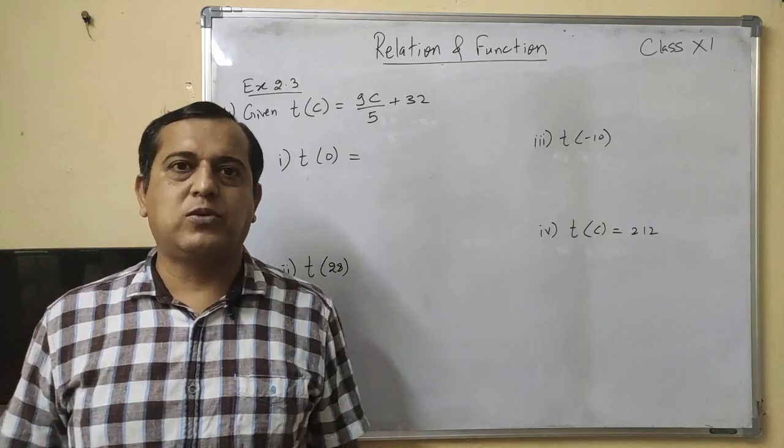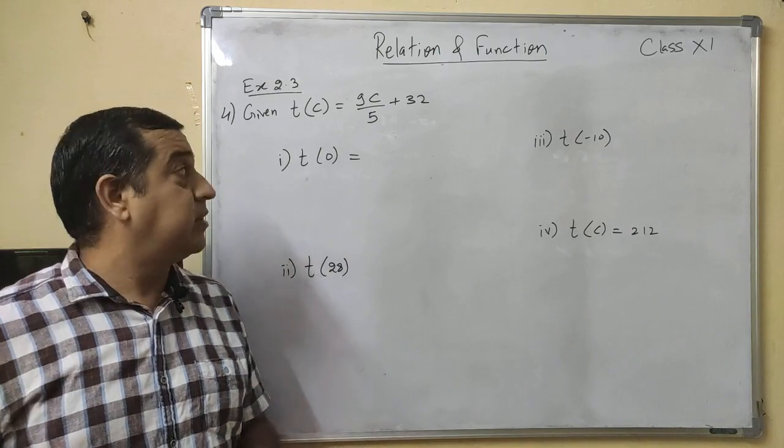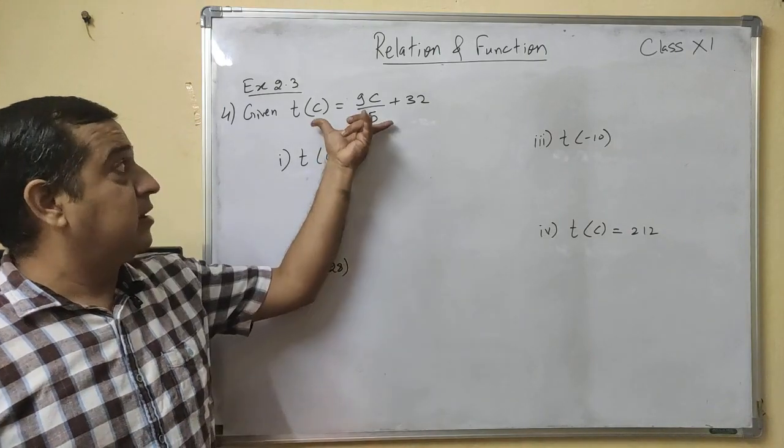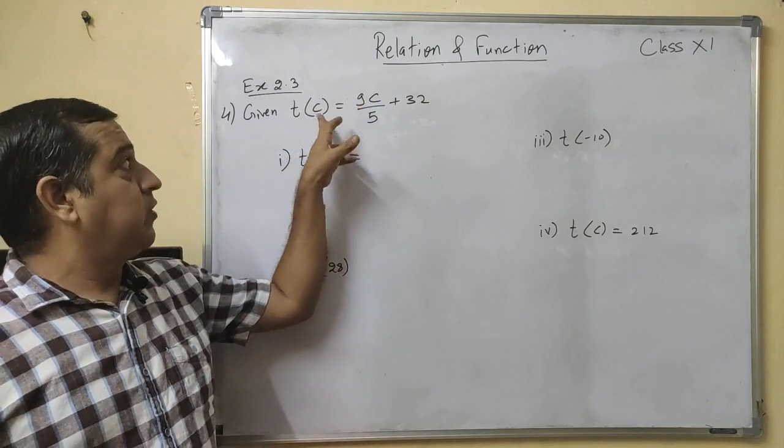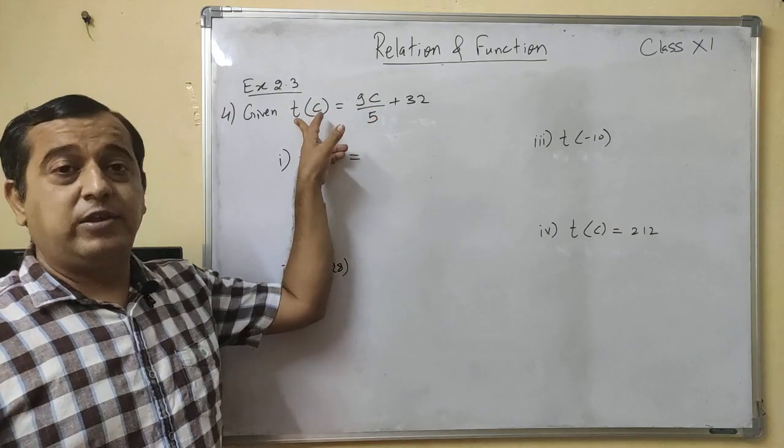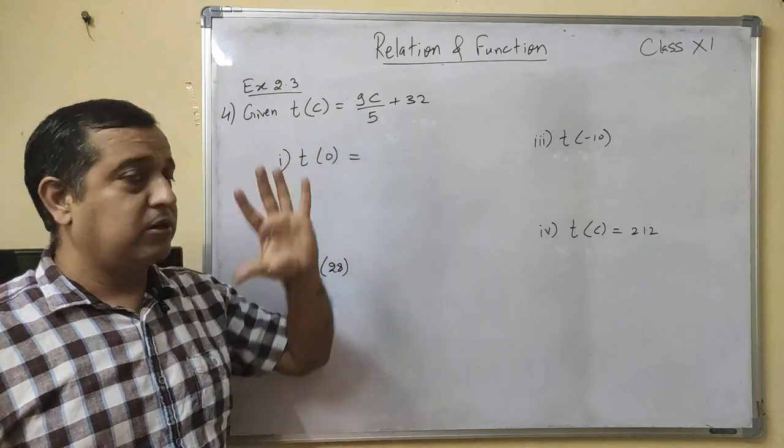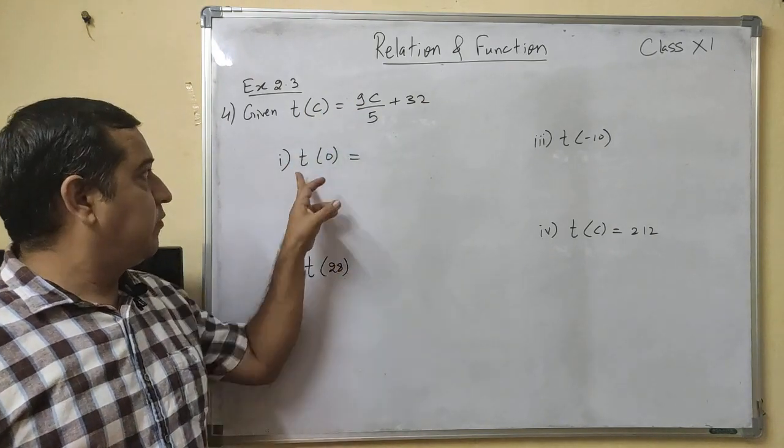Okay, proceeding further we come to next question, question number four. In this case two temperatures are given to you, one in Fahrenheit and other in degree Celsius, and the relation is given to you. T of C is equal to 9C by 5 plus 32. This T is representing temperature in Fahrenheit and C is representing temperature in degree Celsius. This is the relation.